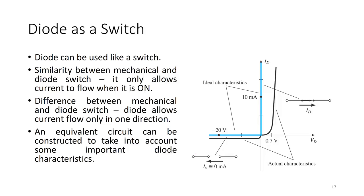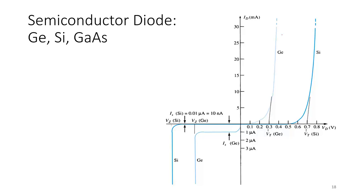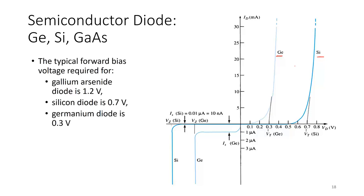An equivalent circuit can be constructed to represent important diode characteristics. Comparing ideal to actual characteristics, one plot shows germanium behavior and the other shows silicon behavior. The typical forward bias threshold voltage for gallium arsenide is 1.2 V (not shown on the diagram), for silicon it is 0.7 V, and for germanium it is 0.3 V.